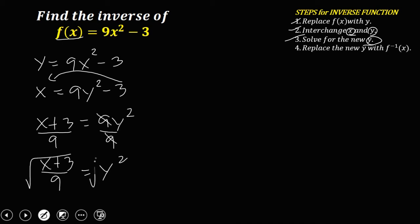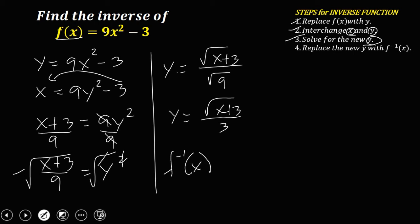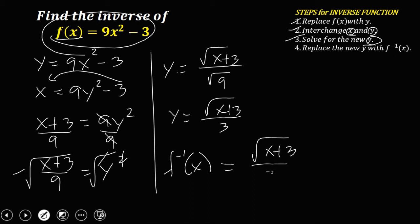Then take the square root of both sides. So y is equal to the square root of x plus 3 over the square root of 9. And since the square root of 9 is 3, therefore the inverse of this function is the square root of x plus 3, all over 3.